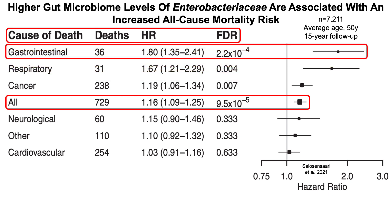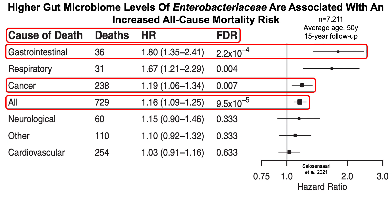Because enterobacteria are located in the intestine, we can see an increased risk of death related to gastrointestinal issues. But also notice there's an increase in cancer — relatively higher levels of enterobacteria means a higher risk of death from cancer. They didn't specify in the paper if that was gastrointestinal-only cancer, but this is total cancer.